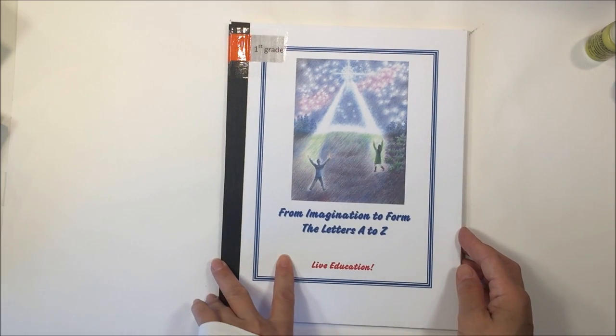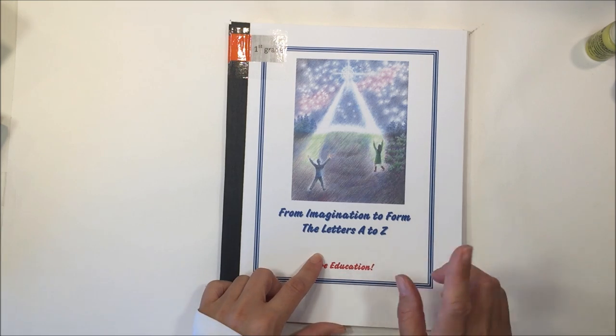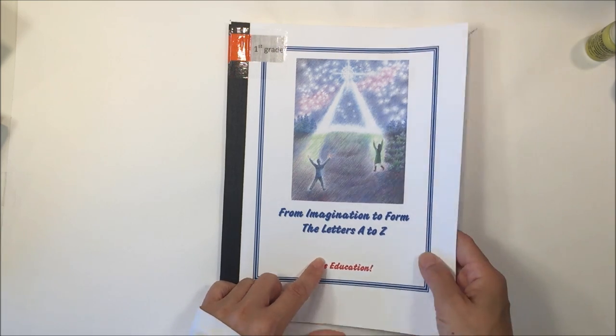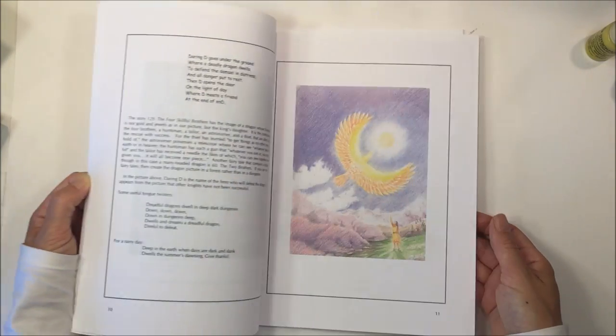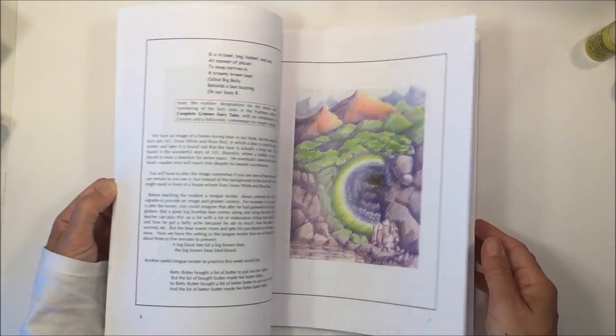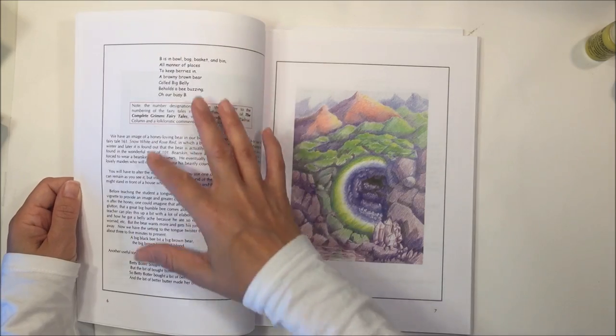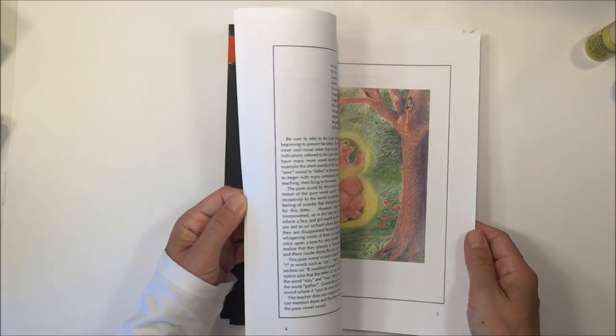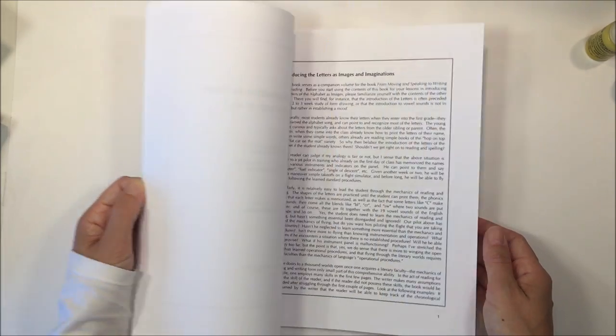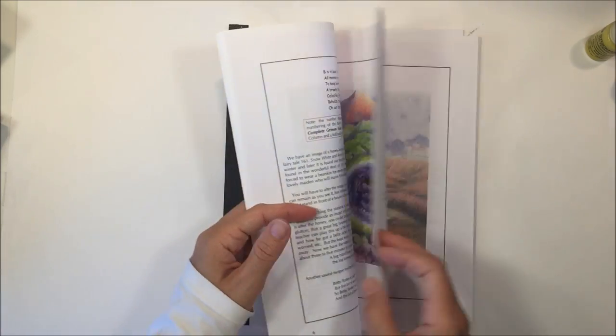The next book is From Imagination to Form, the letters A to Z. You want to do this one after you do the form drawing main lesson block. This one goes through all the different letters of the alphabet. It includes a story and a poem. This is a great way to introduce each of the letters. It's a really beautiful artistic expression.